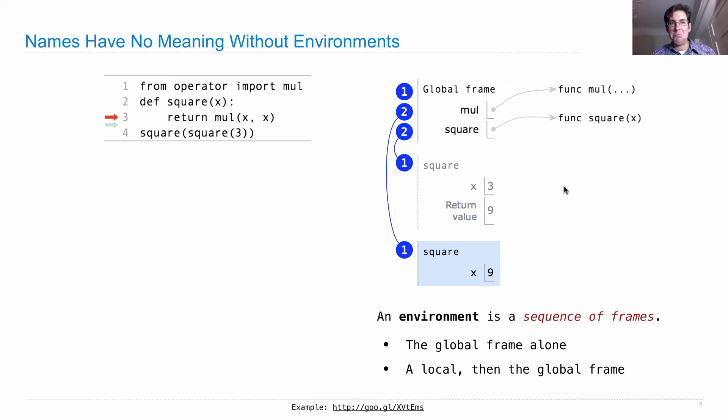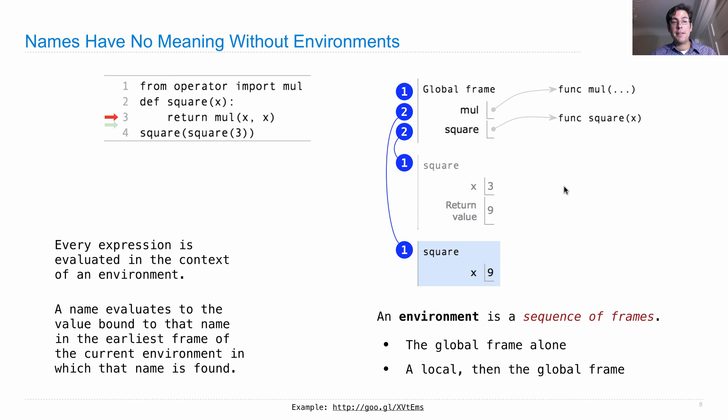These names, x, mul, square, they have no meaning without these environments. So every expression that we evaluate through the course of execution of a program is evaluated in the context of an environment. And a name evaluates to the value bound to that name in the earliest frame of the current environment in which that name is found. I said that last time, I told you it was important. Let's look at some examples.